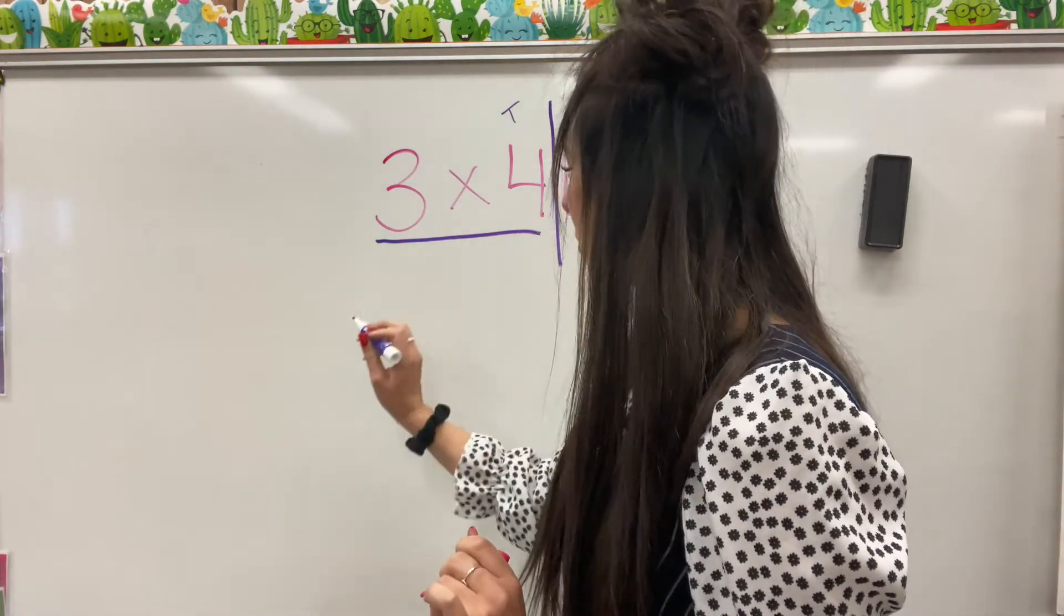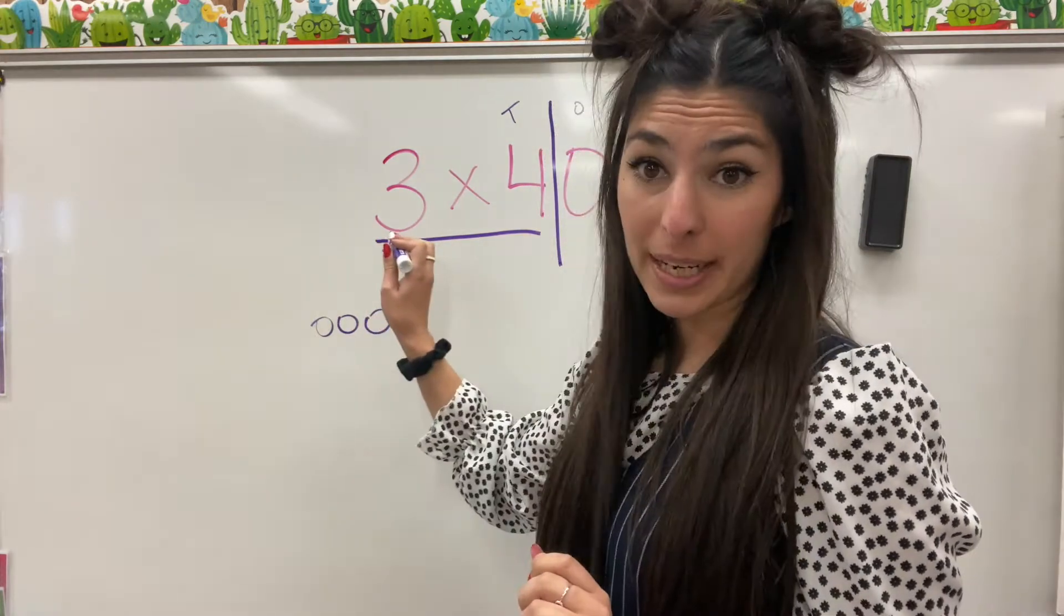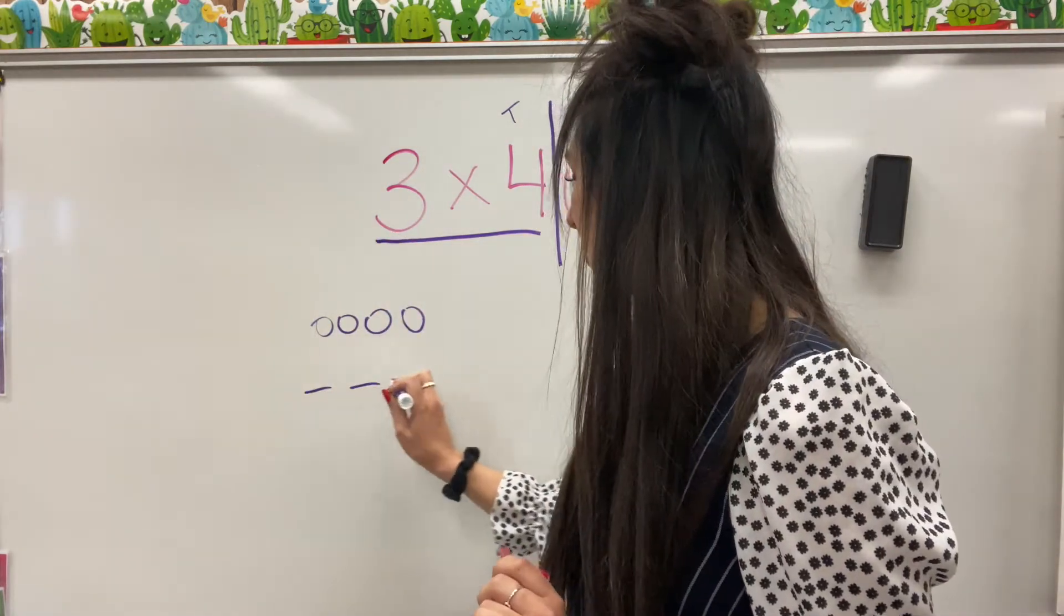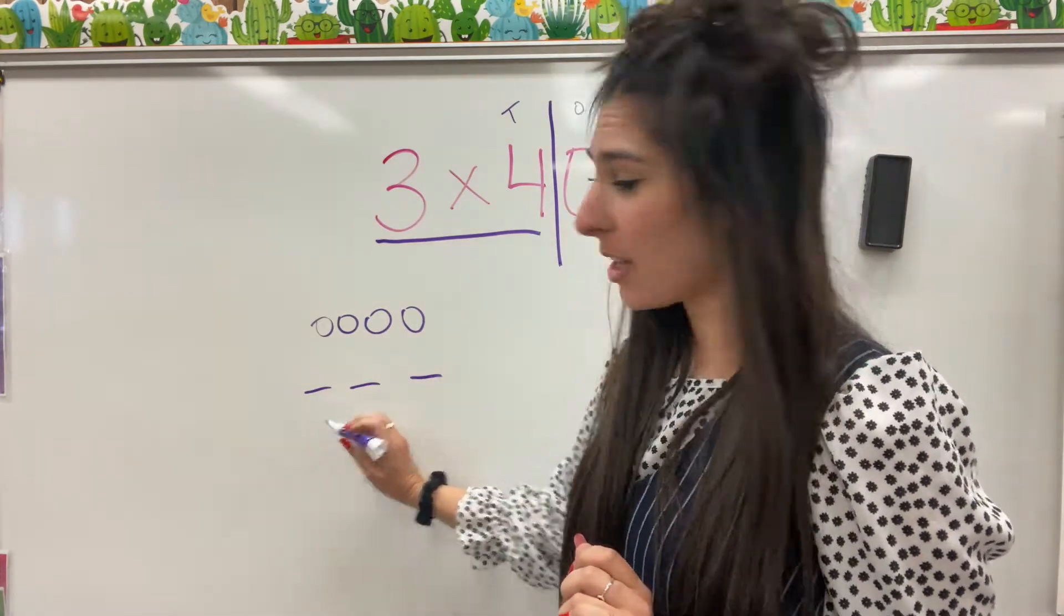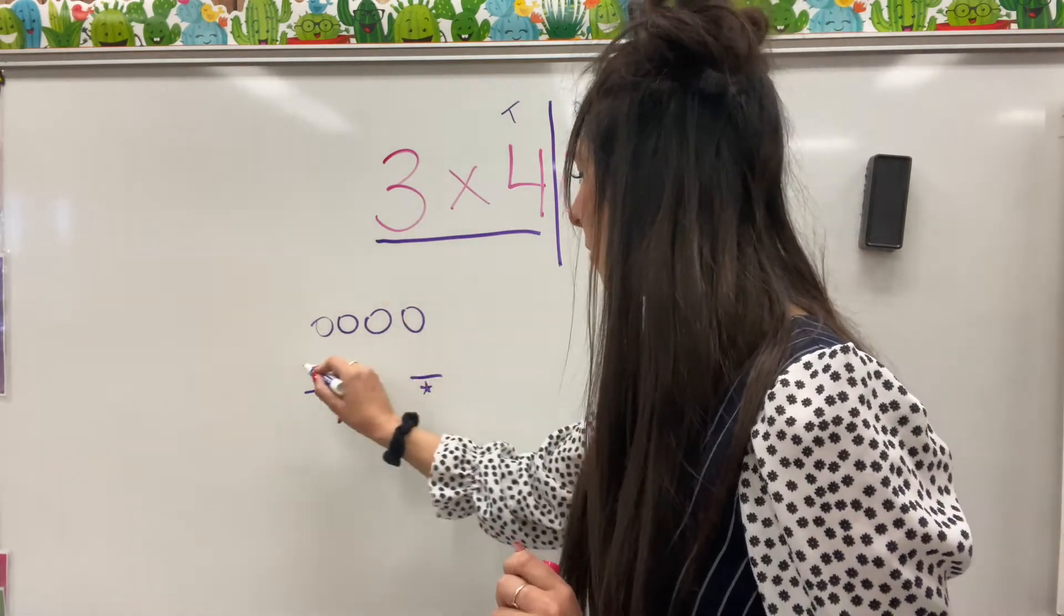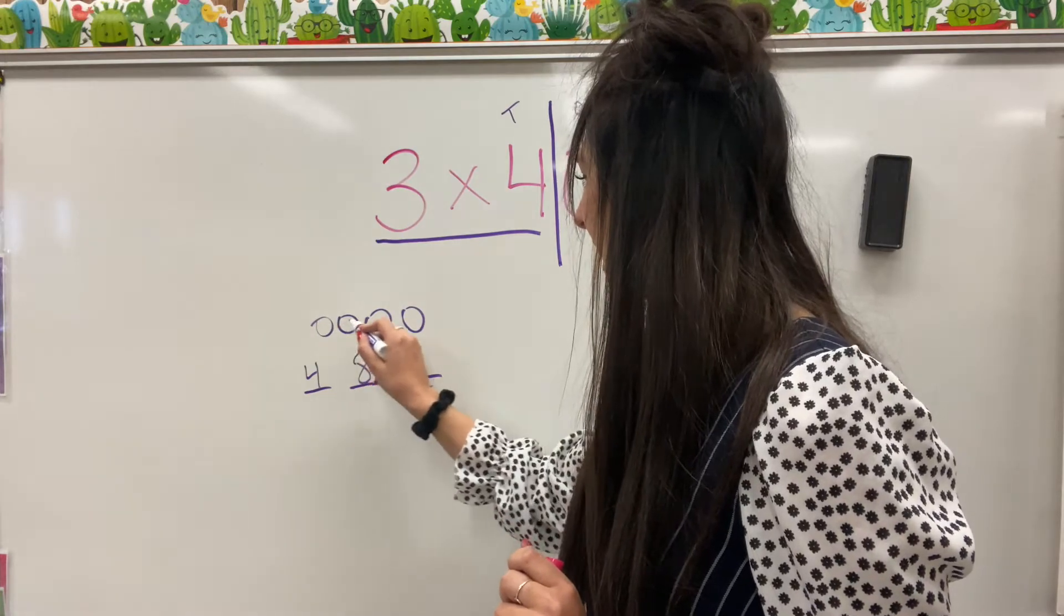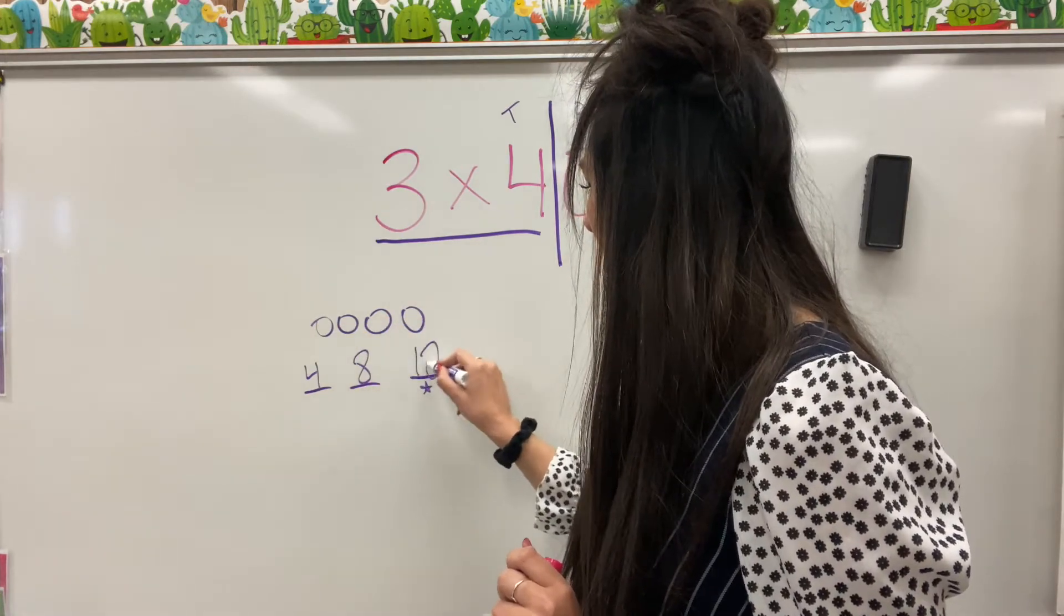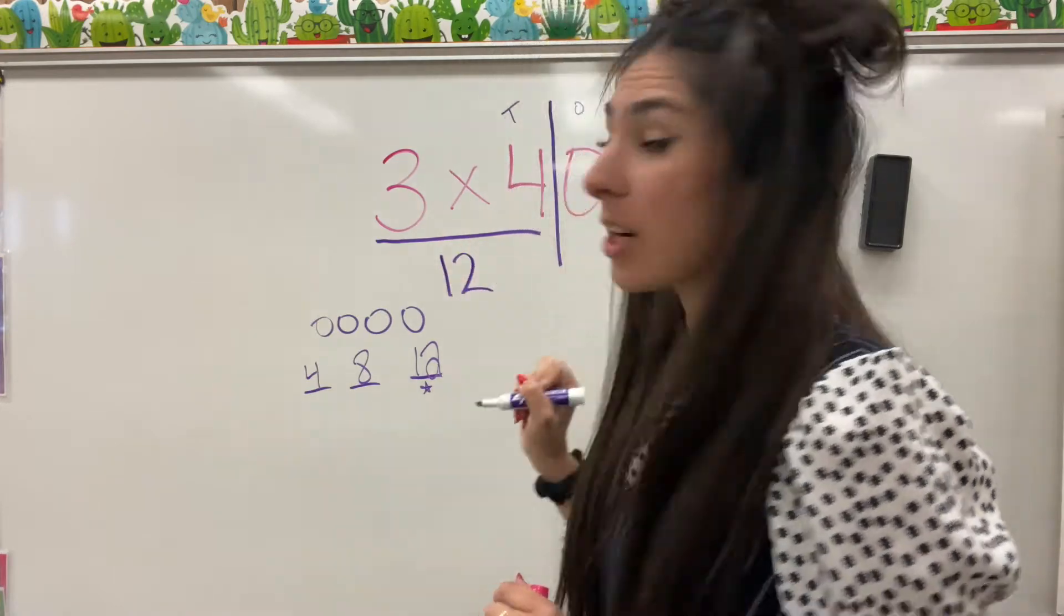Let's do 4 circles. 1, 2, 3, 4. 3 lines. 1, 2, 3. And we're going to count these and every time we count these, we're going to put the number on the line and of course this last one here is going to be our answer. So we have 1, 2, 3, 4, 5, 6, 7, 8, 9, 10, 11, 12. So 12 is our answer here.